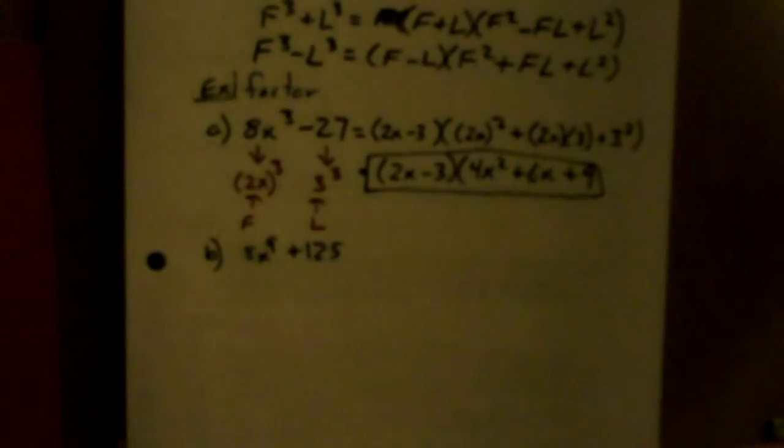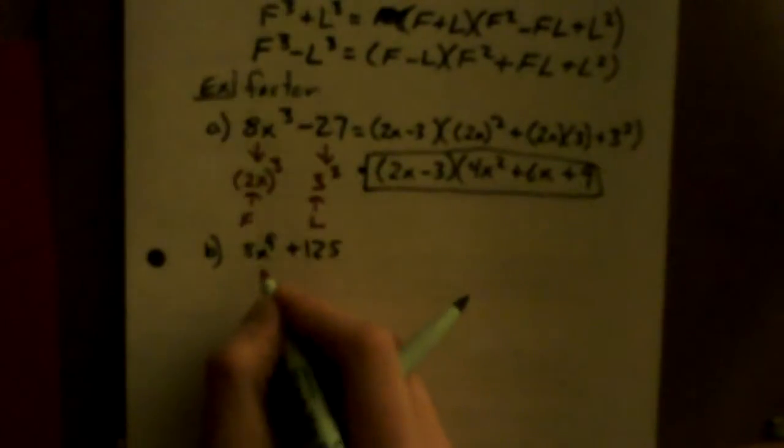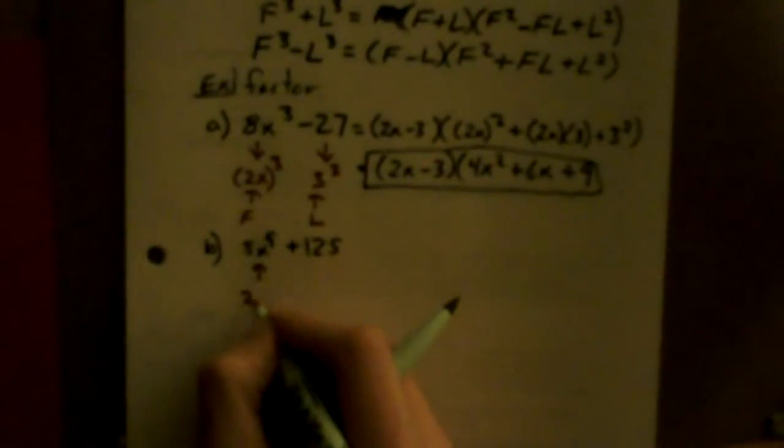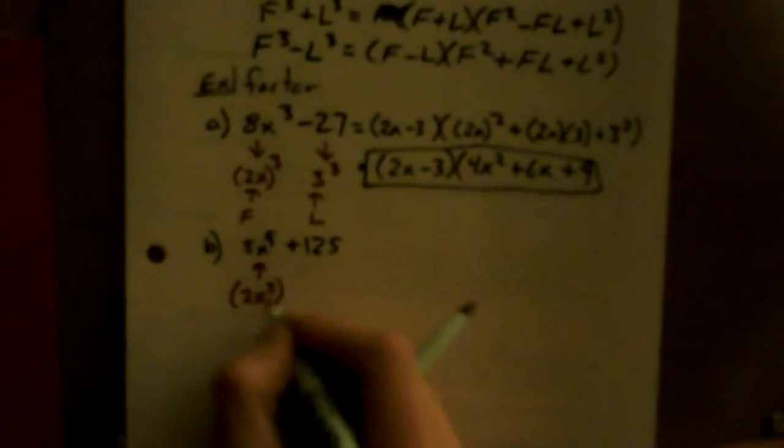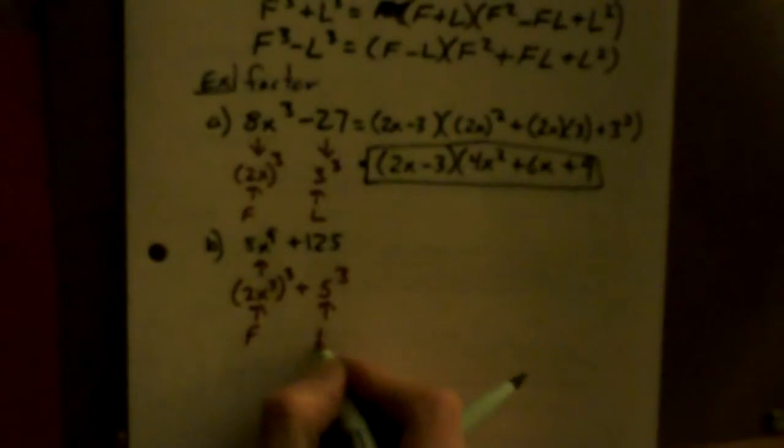This is a sum of cubes. What's being cubed this time? This is (2x³)³ plus 5³. This is F, this is L.